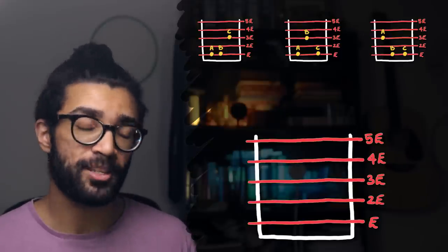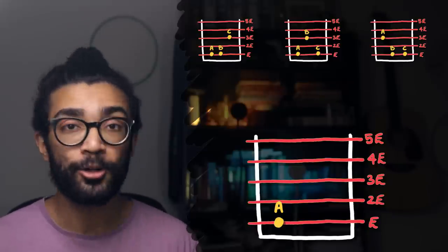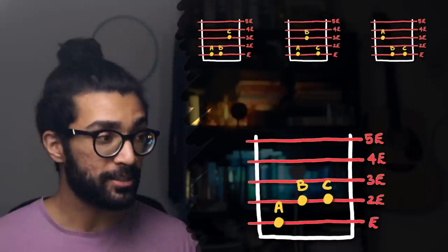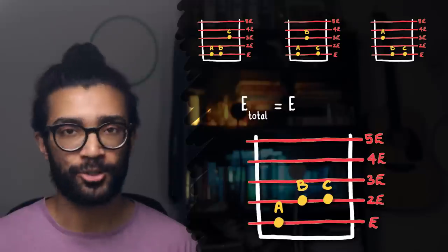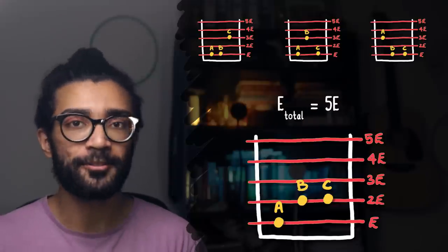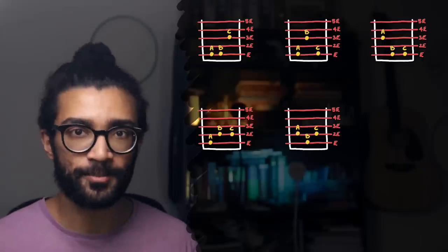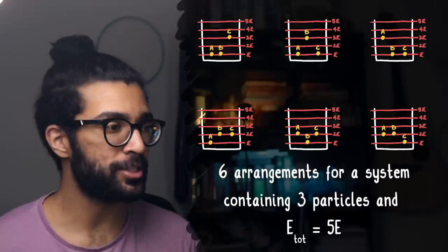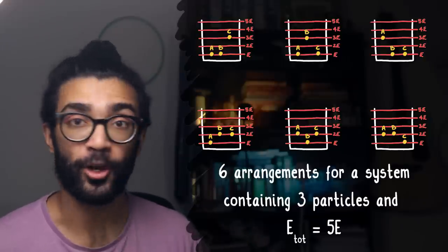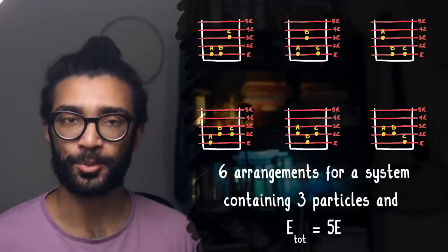And we can actually arrange these particles in a slightly different way. Say, for example, particle A is in the lowest energy level again, but this time, both particles B and C are in the second lowest energy level, 2E. Because now the total energy of the system is 1E plus 2E plus 2E, which is still 5E. And equally, the particles could be distributed like this, or like this. And so just as a quick summary, we see that there are 6 different ways in which to arrange our particles, so that we've got a box which contains 5E worth of energy, and there are 3 particles within that box.